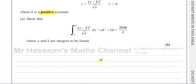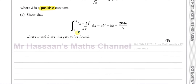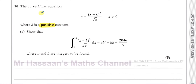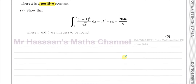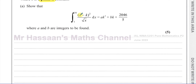It says show that the integral of this curve with respect to x between the limits of 1 and 16 is given by ak squared plus bk plus 2046 over 5, where a and b are integers to be found. So we have to write it in terms of k, but we need to find the actual values of a and b. Let's think about how we're going to deal with this and integrate.